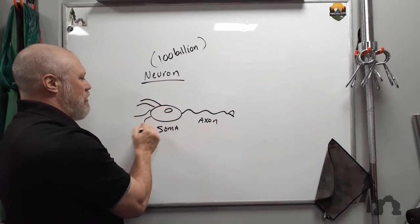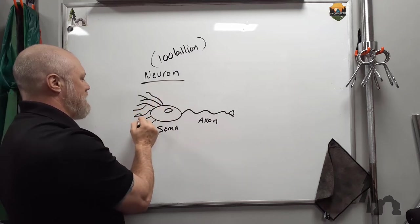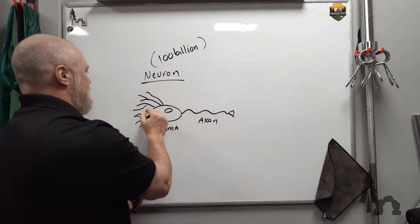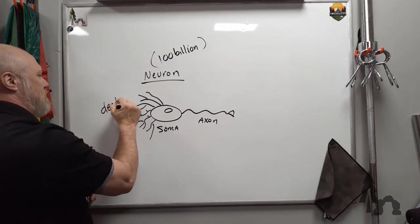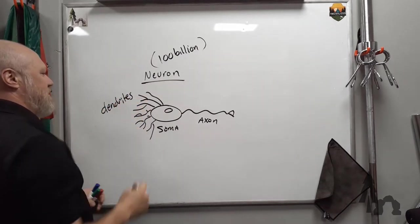The other end of the soma has a bunch of little squiggly, tinier projections, fibrils coming out, that kind of make a little dense nest. And these are called dendrites. Dendrites, like branches.